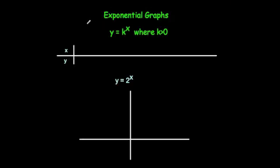In this video we're going to look at exponential graphs. An exponential graph is whenever you've got y equals k to the power of x, where k is a positive number — a number that is bigger than zero. So an example would be something like y equals 5 to the power of x, or y equals 2 to the power of x.